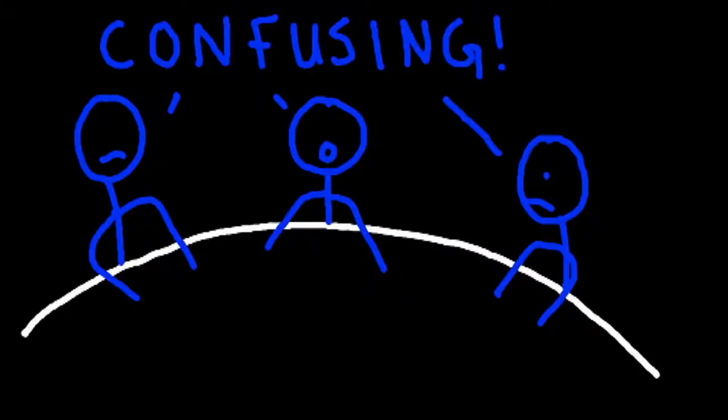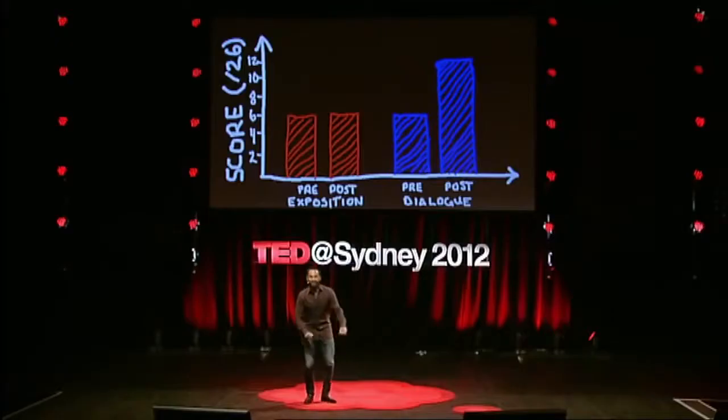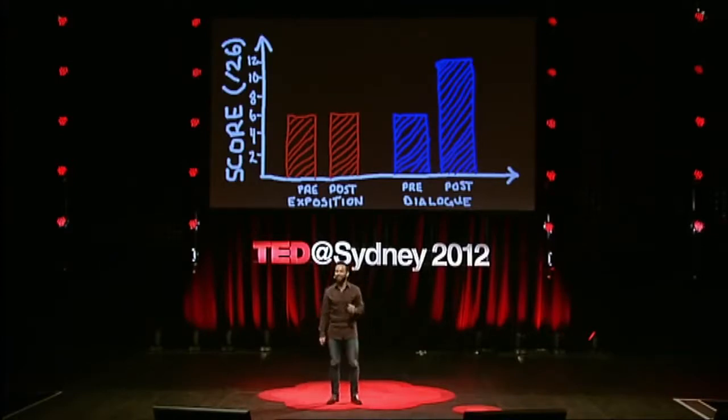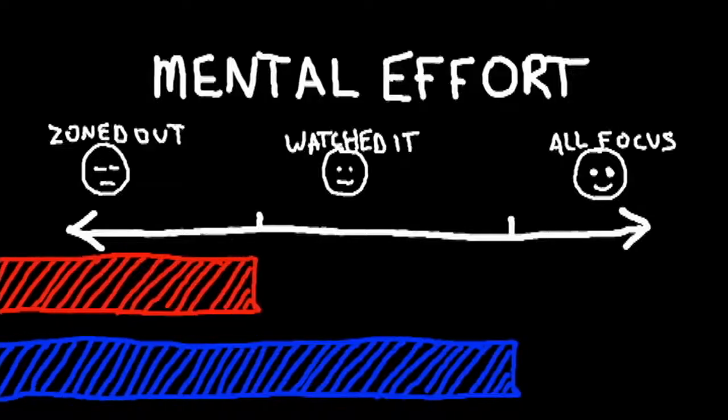What did the dialogue students say? No one told me that it was clear. No one told me it was concise. No one said it was easy to understand. In fact, most of the time they told me it was confusing. Maybe this backfired. So how did they go on the post-test? Well, their scores nearly doubled to 11 out of 26. After the video, I asked students to rate their mental effort — how much mental effort did you expend while watching that video? And the students who watched the dialogue invested significantly more mental effort in engaging with that presentation than students who saw only an expository summary.